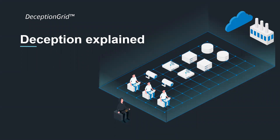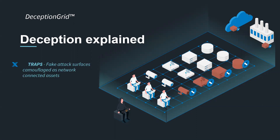So how does this work? This is an illustration of a typical network, with workstations, IoT devices, cameras, printers, and others, communication devices, databases, servers, etc. We start by placing traps in the network. Traps are fake attack surfaces, camouflaged as network-connected assets. They can look like any network element, from a Windows server to an MRI or an ATM machine. Traps are invisible to the users, but for the hackers, they look like genuine and attractive network elements.